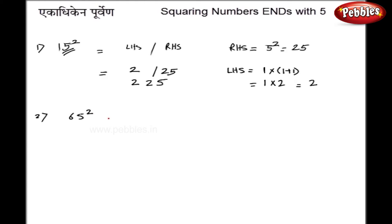Let us take another example. Say 65 square. So here, my right hand side is 25 and left hand side, I will multiply this 6 by 6 plus 1, that is 6 into 7 which equals to 42. So my left hand side is 42 and my final answer is 4225.